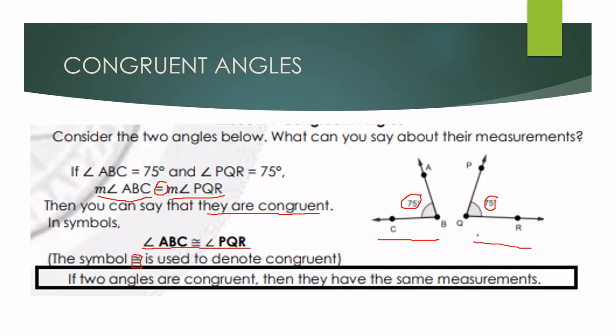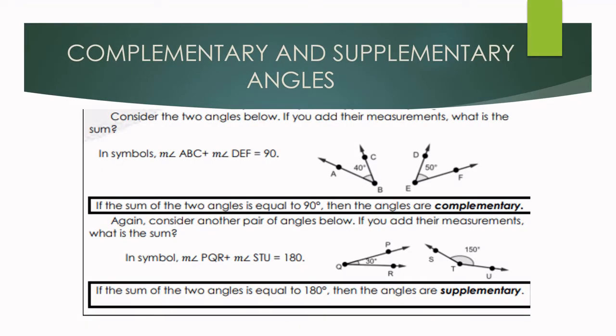Again, if two angles are congruent, then they have the same measurements.